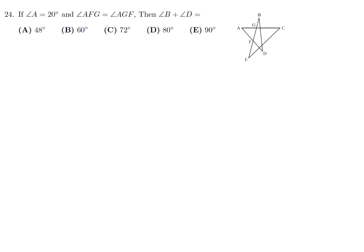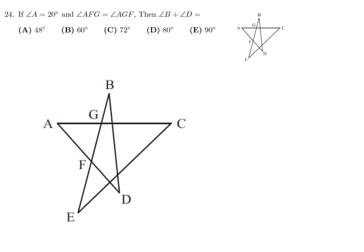If angle A equals 20 degrees and angle AFG equals angle AGF, then what is angle B plus angle D? Angle A is 20 degrees and angles AFG and AGF are equal, so we call them both X. Therefore 20 plus X plus X equals 180, giving 2X equals 160 and X equals 80.